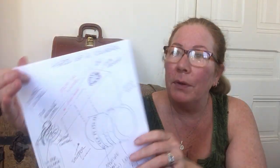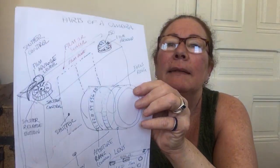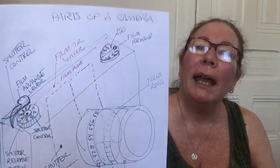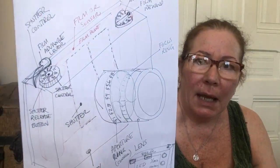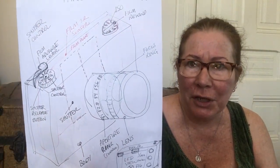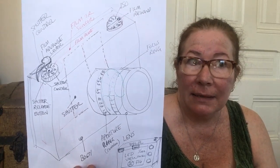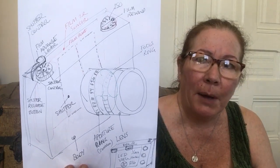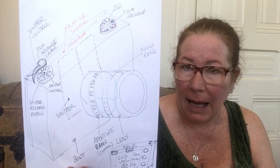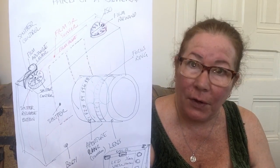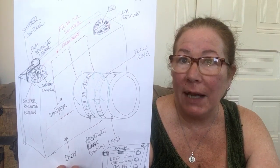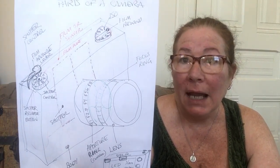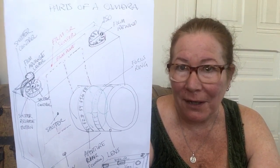One last thing: where the film is — or the sensor is — in the back of the camera is called the film plane. I would write that down if I were you, because the film plane is something we talk about when discussing lens sizes and aperture sizes. It'll help you to understand those concepts if you know that the film plane is where the image is recorded, whether it's film or a sensor.